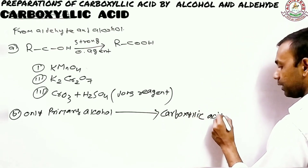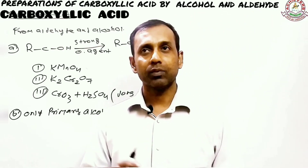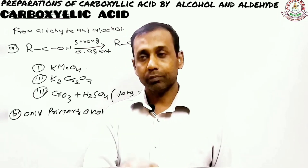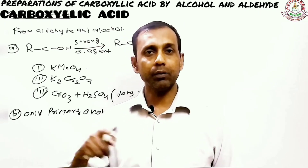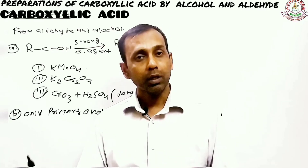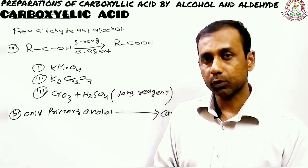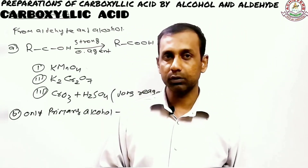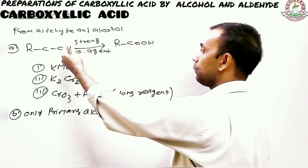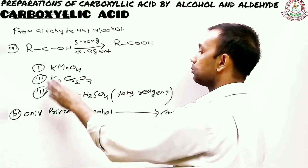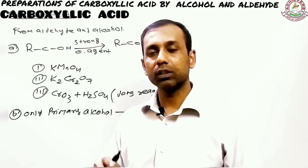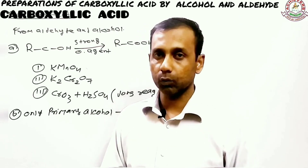The question is why only primary alcohol? If you remember from the previous section, if you take secondary alcohol or tertiary alcohol, the secondary one will convert into ketone, and the tertiary will convert into alkene because tertiary alcohols cannot be oxidized. So oxidation of alcohol converting into carboxylic acid only involves primary alcohol. Secondary alcohol converts into ketone and tertiary alcohol converts into alkene.